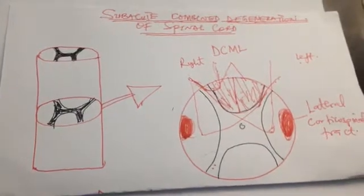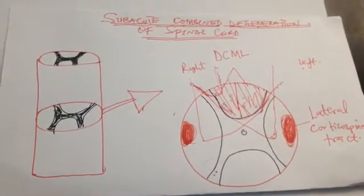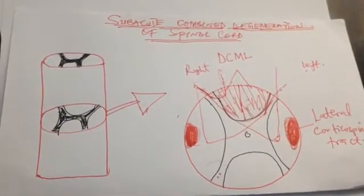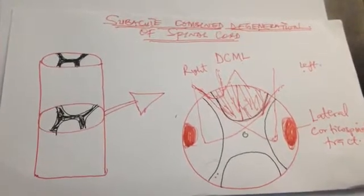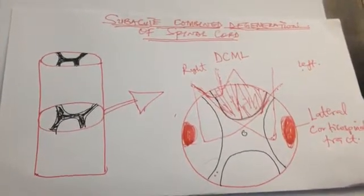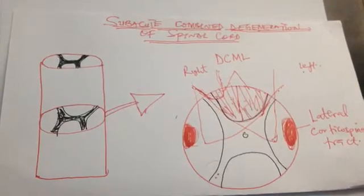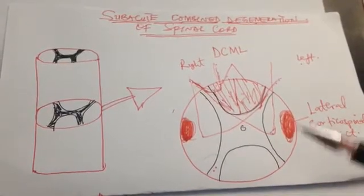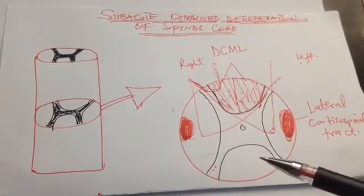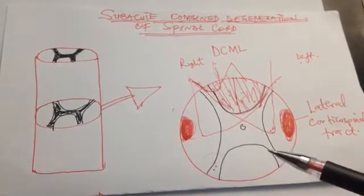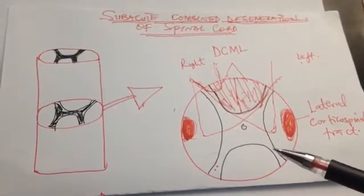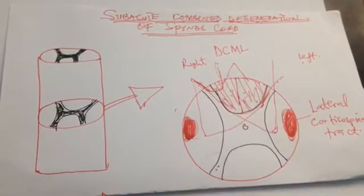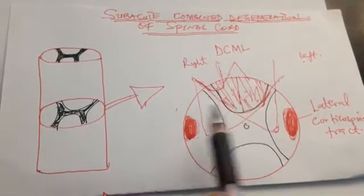Hello everyone, today we are going to discuss an important disease called Subacute Combined Degeneration of the Spinal Cord. Before we dive into the topic, let us review some basic anatomy.